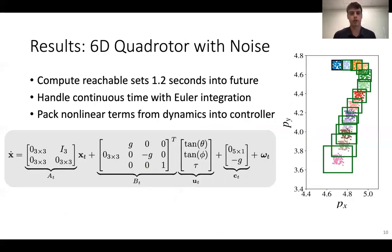We also scale up the idea to a six-dimensional quadrotor, and we add some sensor and process noise. In this case, we're plotting just the XY position. Starting from here, looking about 1.2 seconds into the future, we can compute reachable sets as the vehicle tries to move towards the origin with some trained neural network controller. If you look at the dynamics, we're able to handle continuous time dynamics just by doing some Euler integration. And then we can pack some of the nonlinear terms from quadrotor dynamics into the control value, and this ends up working out pretty nicely in terms of broadening the scope to be able to handle some systems with nonlinear dynamics as well.